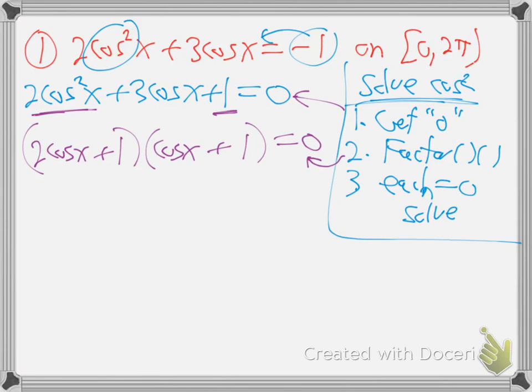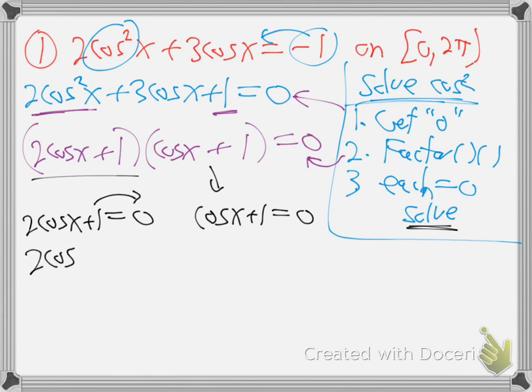Yeah, because they're timesing to be zero. So either one could be zero to make them times and be zero, huh? So the first one's zero. So two cosine X plus one is zero. Or the second one is zero. All right. Let's solve now and then solve. So jump the one over. Two cosines negative one. Divide by two. Cosine X is minus a half.